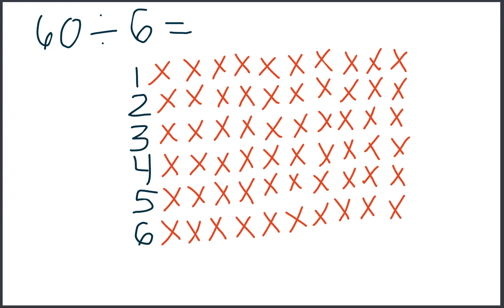Sorry, it looks like I went up a little bit with my x's. But our job now is to count how many x's are in each row, and that will tell us our quotient. We want to still count how many are in the next row, so we're not adding on, but starting back at 1 to make sure that each row has the same amount.